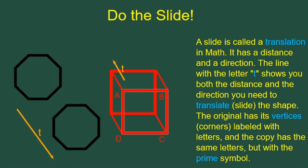And we show which is the original and which is the copy by putting the same letters, but with the little prime symbol. The original is A, B, C, D. The copy is A prime, B prime, C prime, D prime.